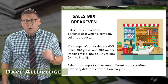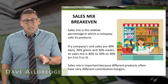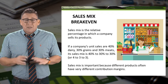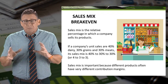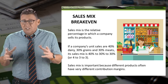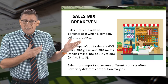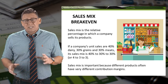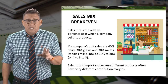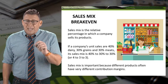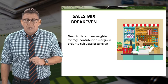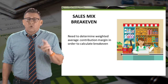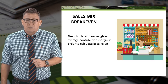Rarely does a company sell just one product, so breakeven becomes more complicated based on the sales mix. The sales mix is the relative percentage in which a company sells its products. Sales mix is an important concept because rarely do different products have the same contribution margin. In order to determine breakeven for multiple products, we need to determine the weighted average contribution margin.